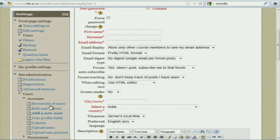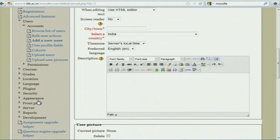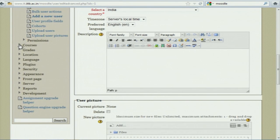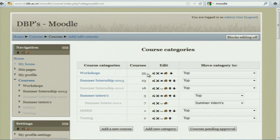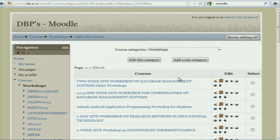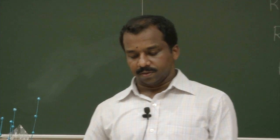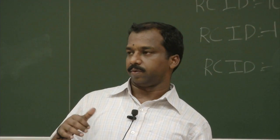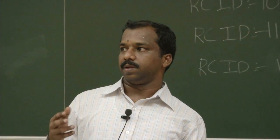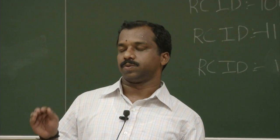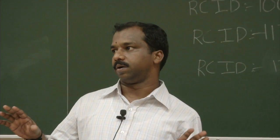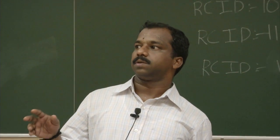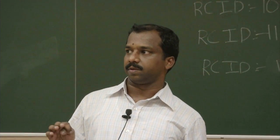If you want to create a course, same thing — go to Courses, click on Add or Edit a New Course. You can categorize them like workshop, summer internship, and so on. There are 2 to 3 categories of users: one is Administrator — all permissions to manage Moodle. The second is Teacher — teachers can upload anything, grade, all those things. Students can only view the contents, submit assignments, and attend quizzes.